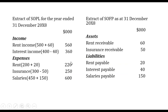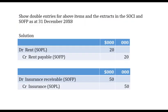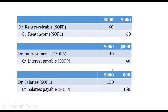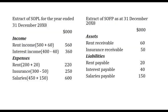For salaries: we are supposed to pay six hundred thousand but had only paid four hundred and fifty thousand as per the question. We add back one hundred and fifty thousand to make six hundred thousand in the income statement, and that one hundred and fifty thousand will be salaries payable as a liability in the statement of financial position. Thanks, and until next time.